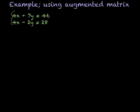The first thing I'm going to do is actually write it as an augmented matrix. So that would be 4, 7, 46, and 4, negative 2, 28. My dashed line is where my equal sign was.